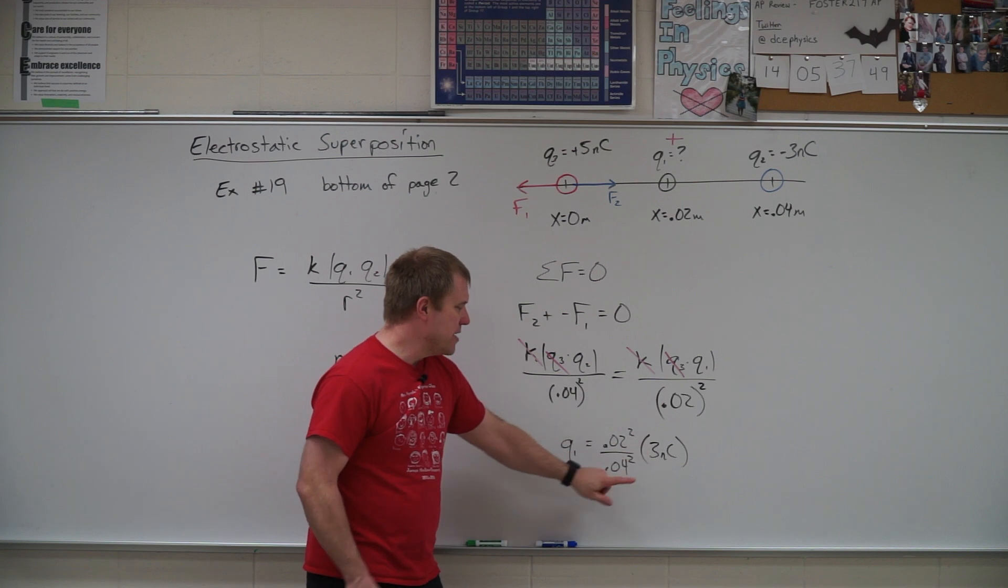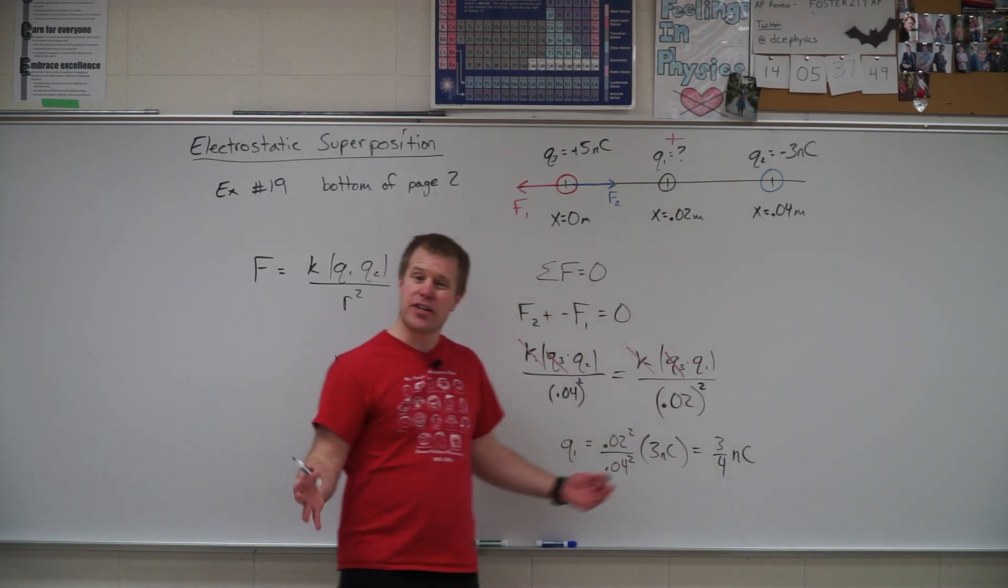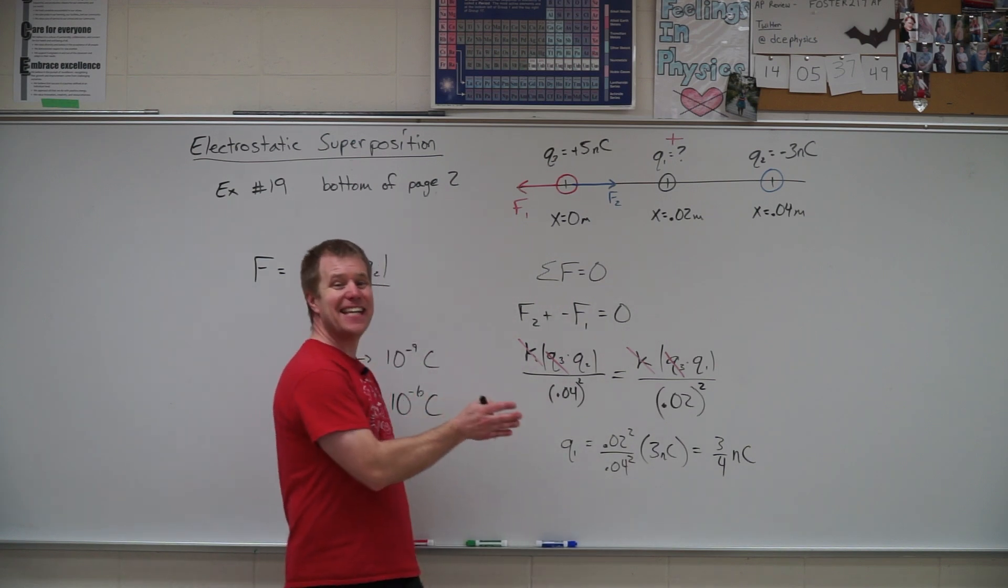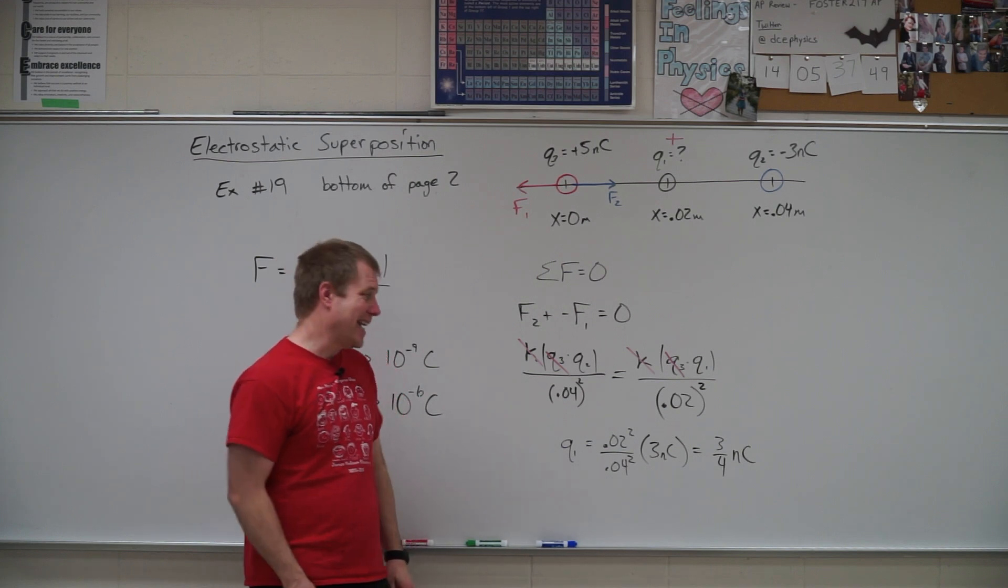And so we get three divided by four, so we get three fourths of a nanocoulomb. If you typed it in your calculator, you would get something like 0.75 times 10 to the negative ninth, or 7.5 times 10 to the negative tenth.